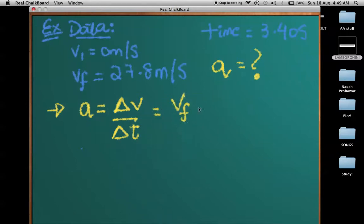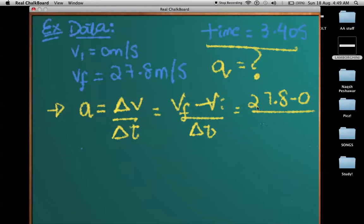We already have the change in time - we know that this is the time interval, 3.40 seconds. But we have to calculate the change in velocity. The change in velocity here is 27.8 minus 0 divided by 3.40 seconds.